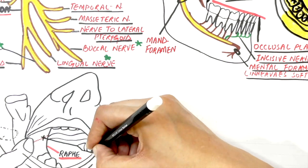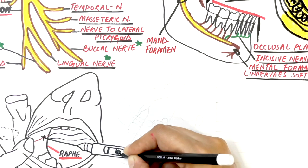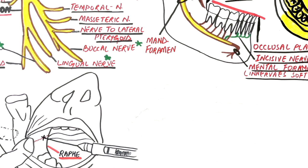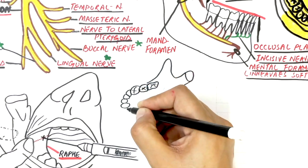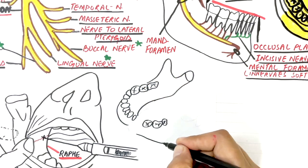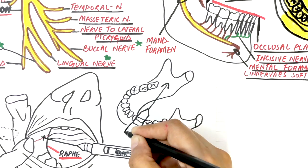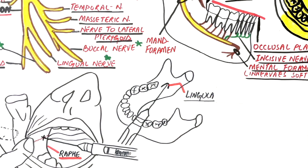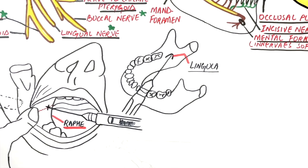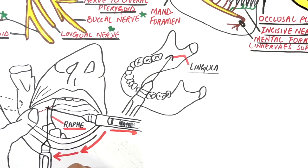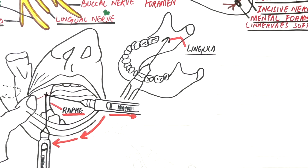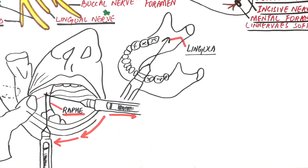With a 25-gauge long needle placed at the corner of the mouth from the opposite side, penetrate the target area until bone is contacted. The bony part of the mandible contacted initially is a small bony projection named the lingula, located close to the mandibular foramen. As soon as you contact the lingula, withdraw the needle about 1 mm and then rotate it towards the target side. Holding the needle parallel to the occlusal plane, draw your syringe forward and inject 1.5 to 1.8 ml of local anesthetic.